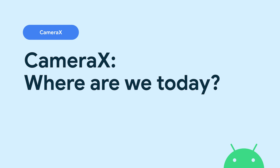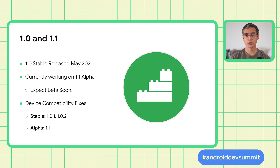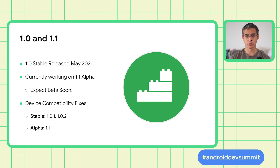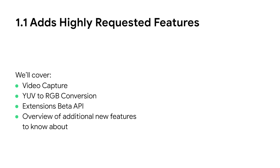So what is the status of CameraX today? We launched a 1.0 stable release in May 2021. We're currently working on 1.1 alpha and expect to reach beta soon. As always, we're constantly adding new device compatibility fixes. These are available as patch versions — 1.0.1 and 1.0.2 for the stable branch, and in our 1.1 alpha releases. 1.1 is about adding features that were highly requested by our developers.